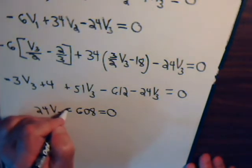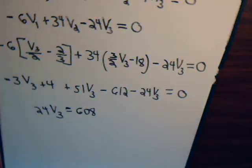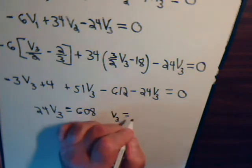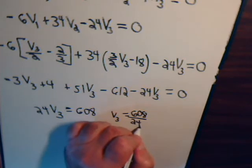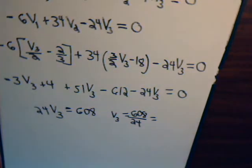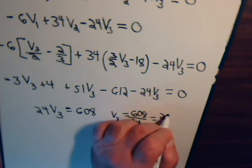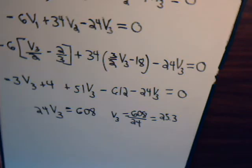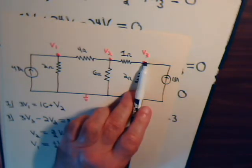That's plus 24 V3. And then we have 4 minus 612. That's minus 608 equals 0. Or just, we can just write it like this. So V3 equals 608 divided by 24. Going to the calculator. I'm just going to round that off as 25 and 3 tenths. So finally, we know what V3 is.